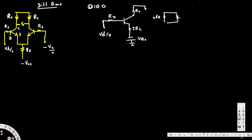We will also have 2Re in parallel, and 2Re in parallel again, with Re connected to ground. Now the first thing we are going to do is the DC analysis.